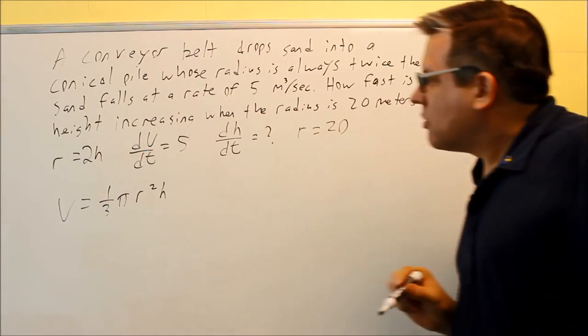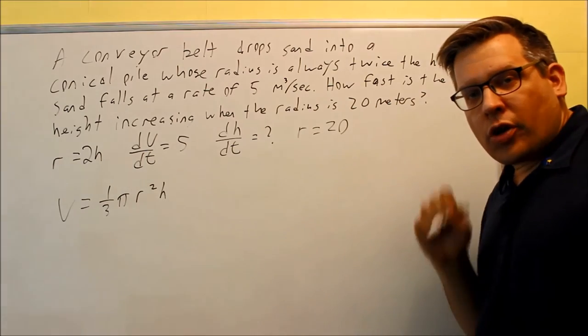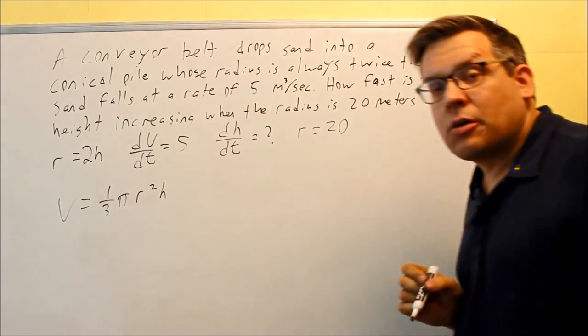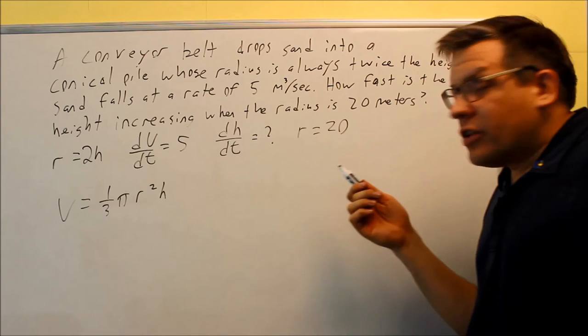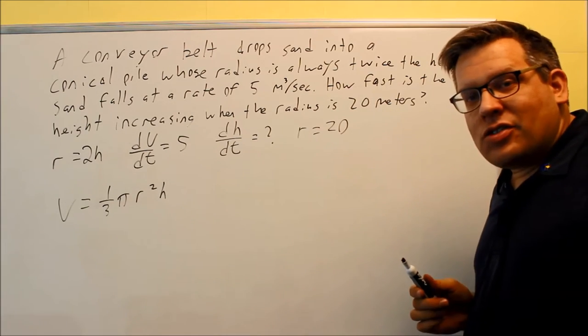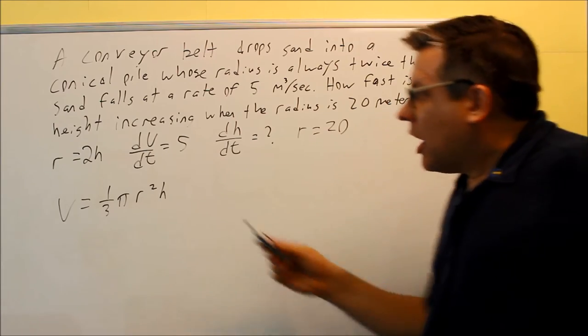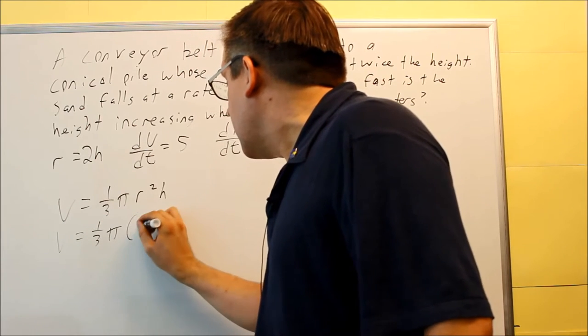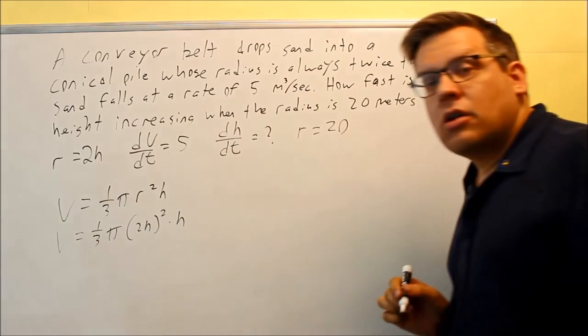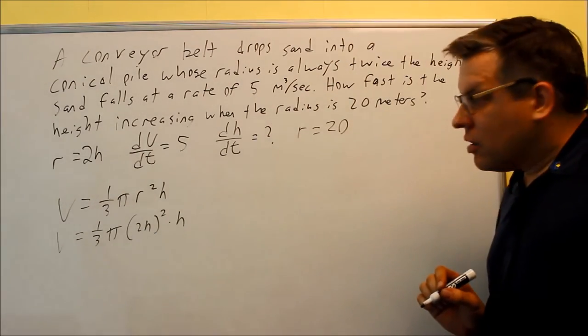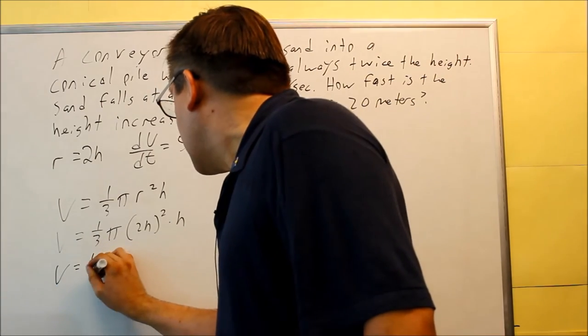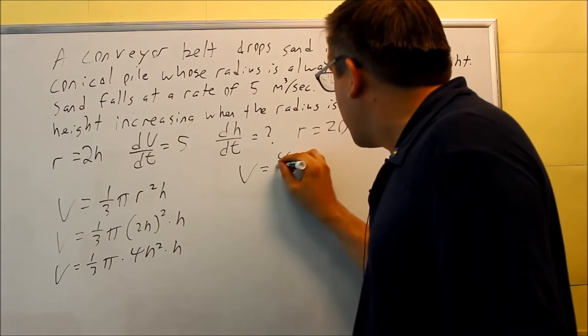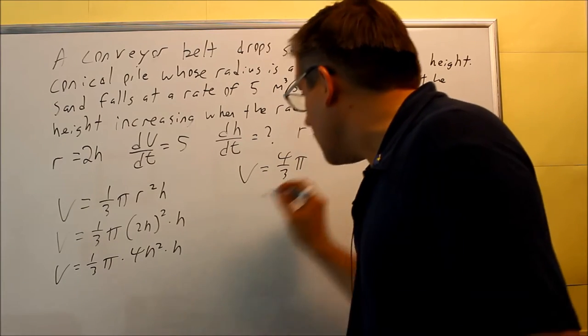Remember back over here they gave us this information that we thought was important, radius equals two times the height. What we're going to use here is this information to replace the r because I want to get this down to one variable. I don't need to worry about using anything with r. There's no dr/dt they're asking for. So I want to eliminate that to make the problem easier. I'm going to put this information, the 2h, I'm going to substitute it into the r. So I get one third pi and then a 2h is going to go in there instead of the r. By doing that, I can eliminate one of my variables. Let's go ahead and simplify one third pi times 4h squared times h. So over here I have 4 thirds pi and then I have h cubed.